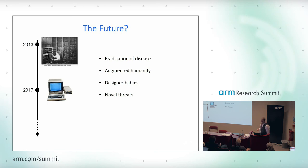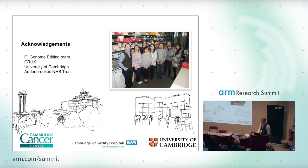So where is the future taking us? Realistically, the eradication of disease is being touted as one of the things CRISPR might bring. Same with augmented humanity, designer babies, and novel threats. Designer babies are a very real possibility given that we're editing the germline now. Novel threats have not been addressed at all. Augmented humanity is a strong interest from governments and scientific research institutes. And eradication of disease is obviously where the bulk of emphasis is at the moment. And that's me — thank you.